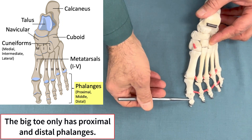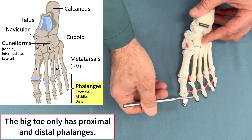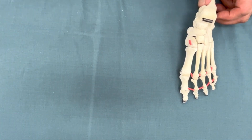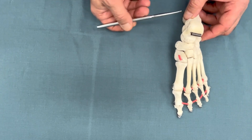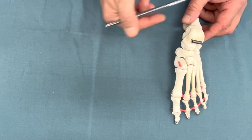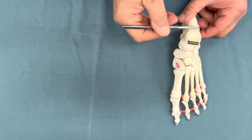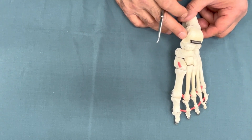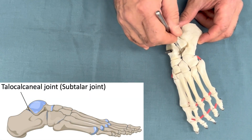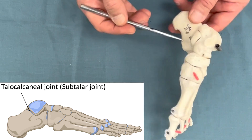Each metatarsal bone has a base, a shaft, and a head — proximal end, shaft, and distal end. Then we have phalanges: two on the big toe — proximal and distal — whereas on the other toes we have proximal, middle, and distal phalanges. When it comes to the joints of the foot, we have the ankle joint. On the distal end we have just the talus articulating there.